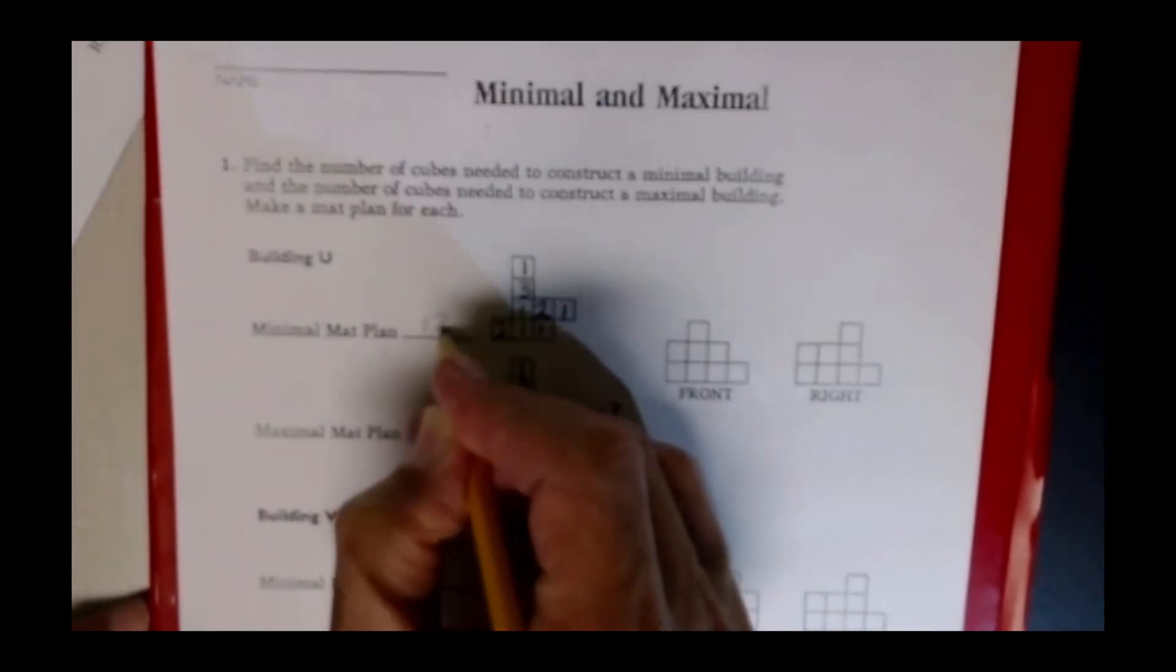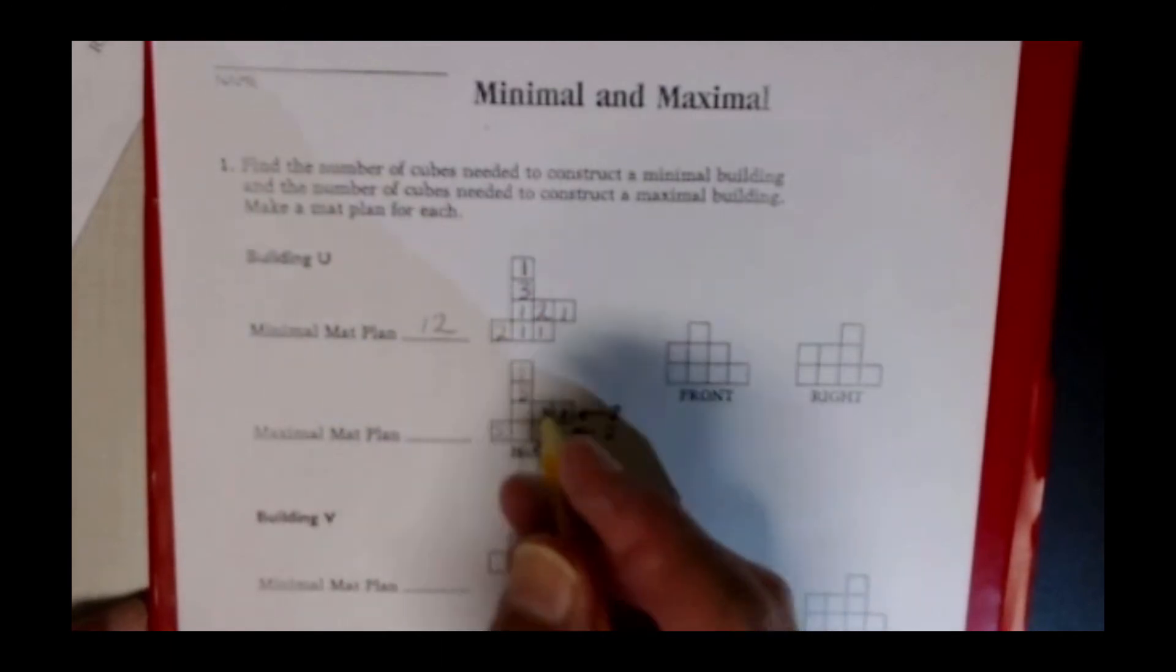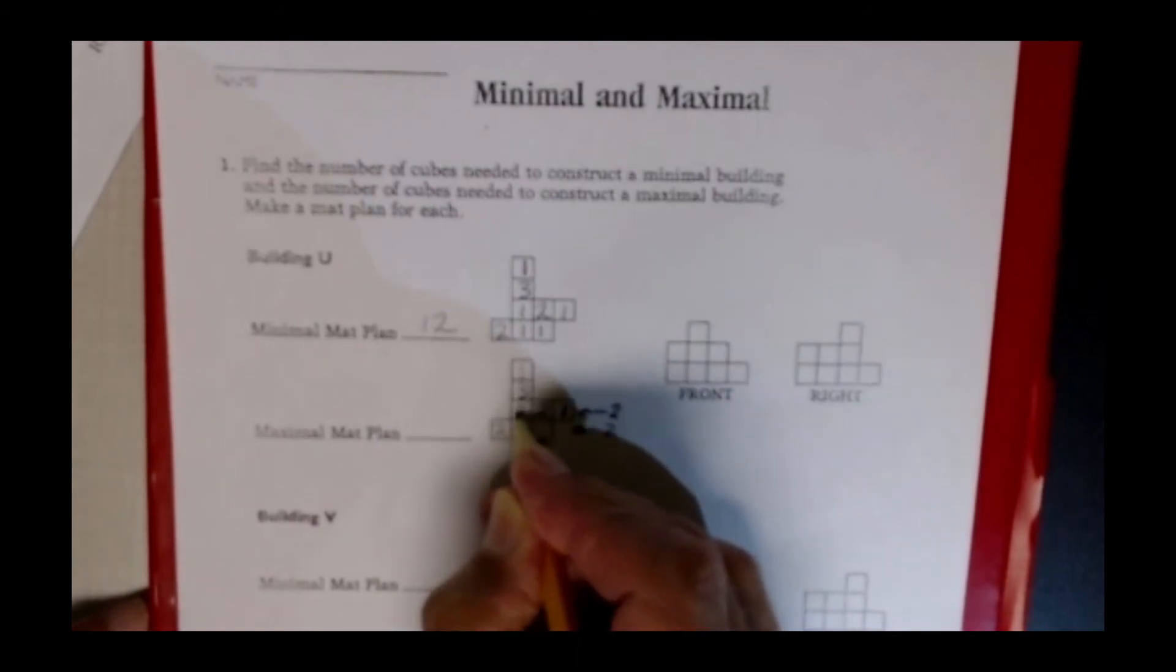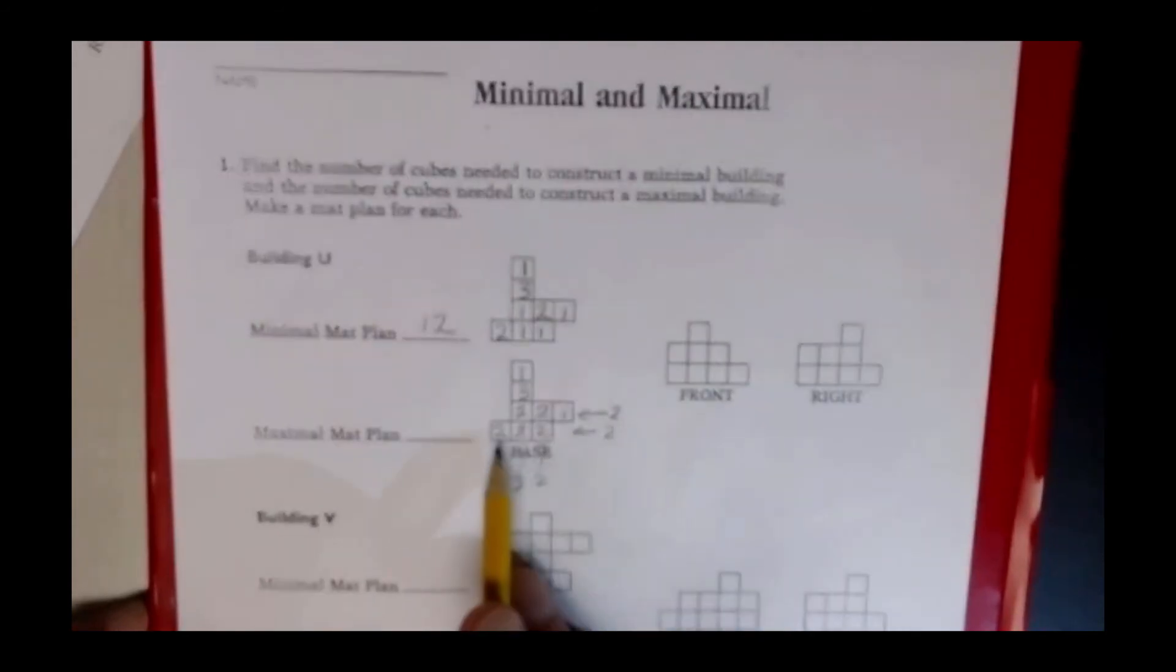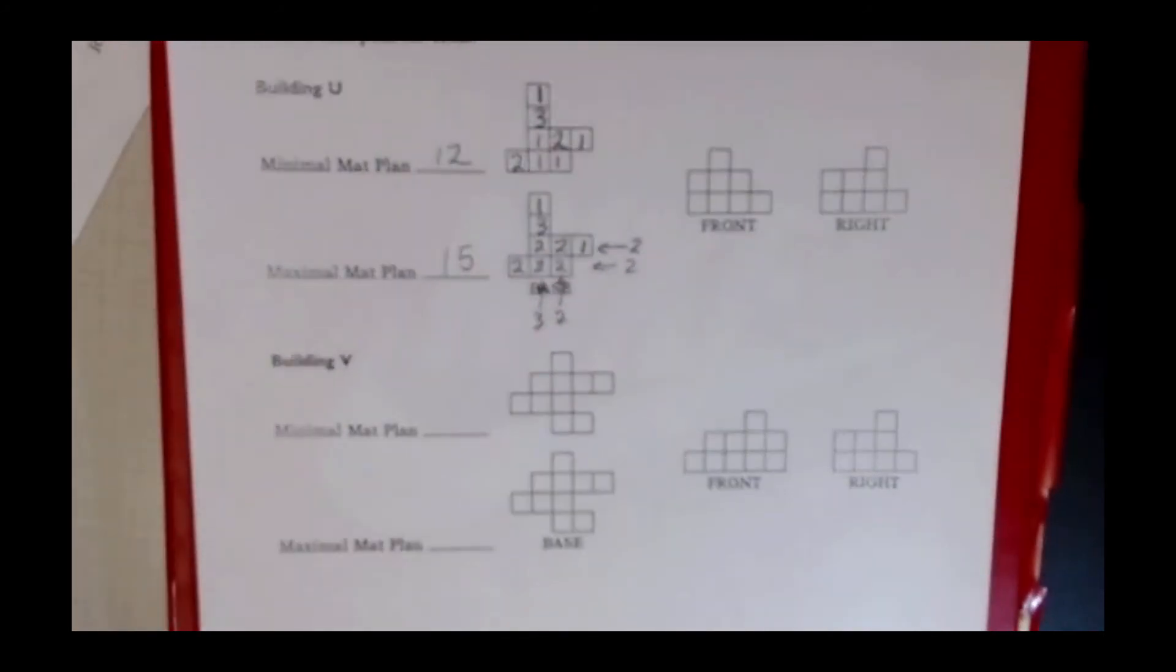Now I'm going to go for the maximal map plan. The maximal map plan can have 2s in all of these positions and that's still going to satisfy my conditions to satisfy the front view and the right view. And this particular maximal plan has 15 cubes. Now let's move down to building V and let's get started on this one.